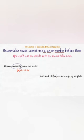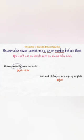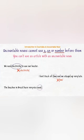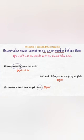— we don't say 'a time' because time is an uncountable noun. 'The beach of Brazil has very nice sand' — we can't say 'a sand' because sand is an uncountable noun.